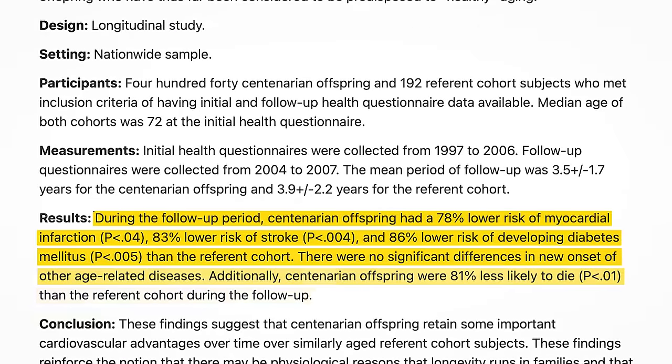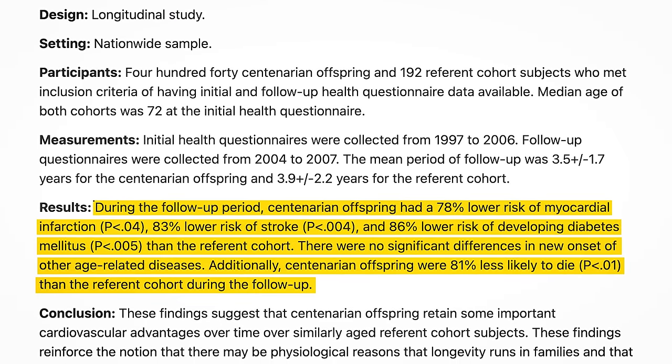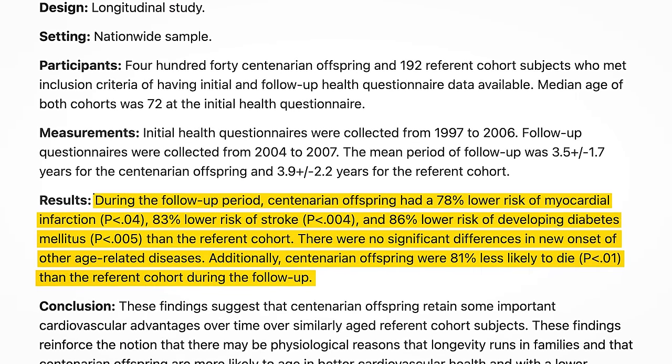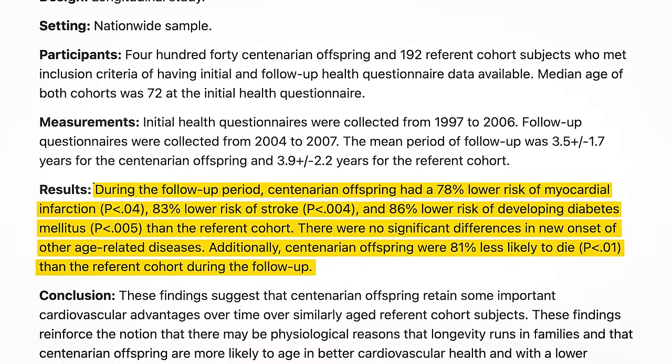Being the offspring of a centenarian has been found to reduce your risk of stroke by 83%, diabetes by 86%, myocardial infarction by 78%, and overall death by 81% compared to age-matched controls. For these people, it's their genetics that improves their blood markers, which slows down their biological aging and reduces the risk of chronic diseases. If you don't have centenarian parents or grandparents, then the greatest likelihood of you becoming a centenarian is to try to optimize your biomarkers, fitness markers, and blood work for as long as possible to avoid the chronic diseases that kill most people.